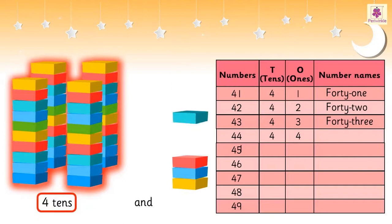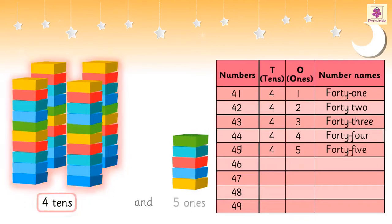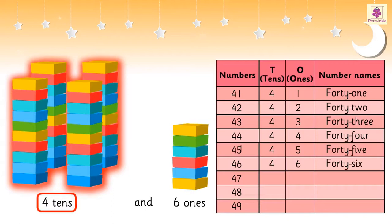Four Tens and Four Ones is 44. Four Tens and Five Ones is 45. Four Tens and Six Ones is 46.